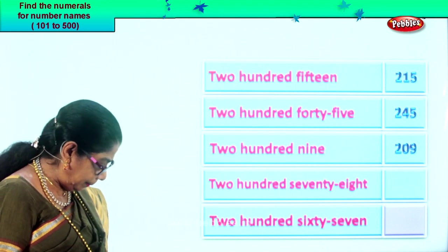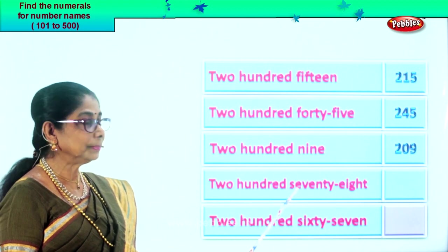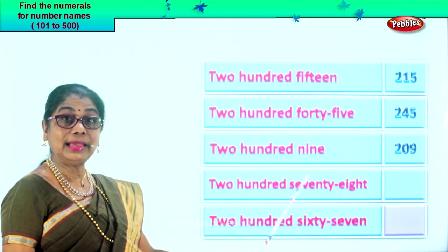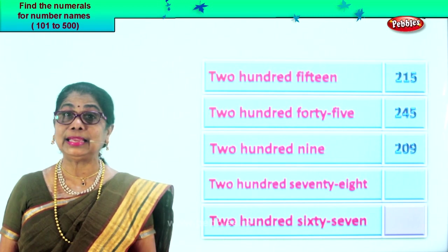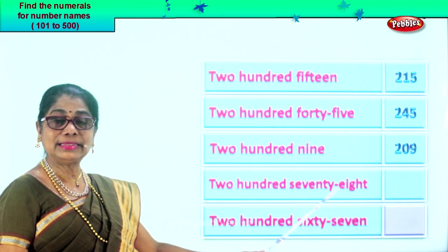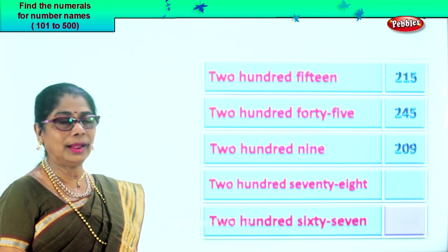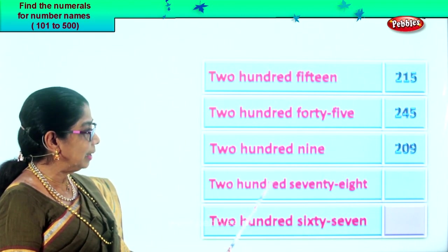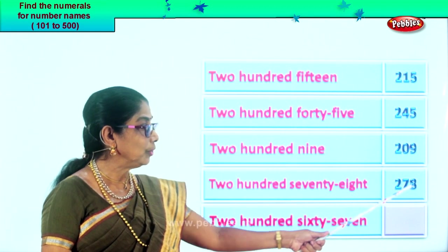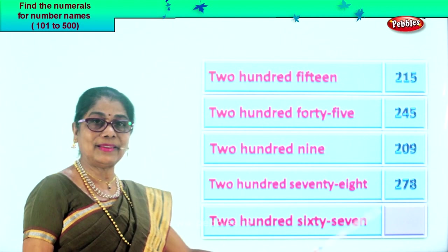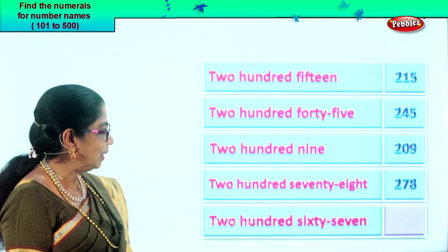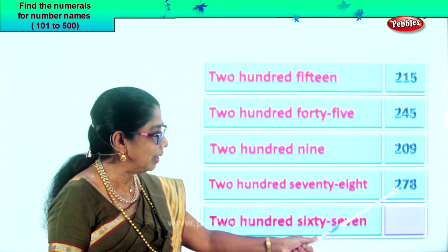Shall we take the next number name? Here we are. Two hundred seventy-eight. Two in the hundredth place, seven in the tens place, eight in the ones place. Two hundred seventy-eight. You put seven and eight, and two hundred. Let's read: two hundred seventy-eight. As you read, put down the numeral. That's it. Very interesting, isn't it?